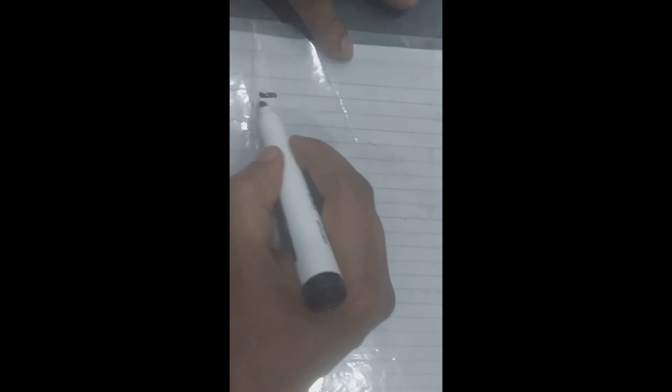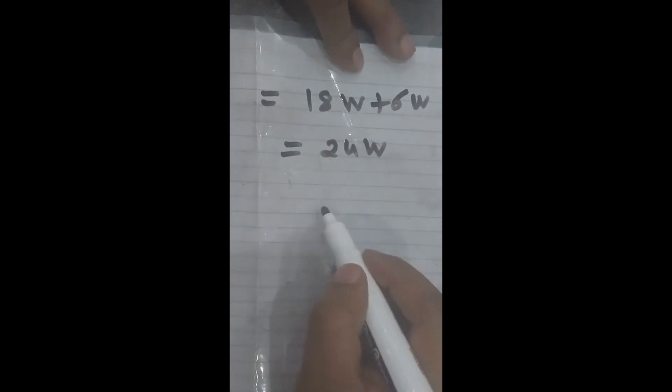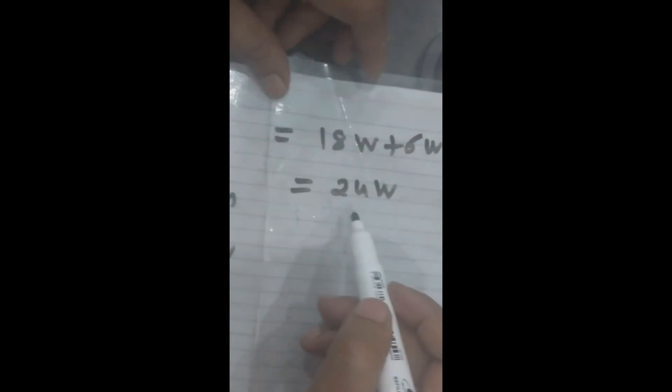It will be 2 times 9W in place of 4M, plus 6W as it is. So we further solve it. It will be equal to 18W plus 6W, which equals 24W. So it means finally we reach the conclusion that 8 men and 6 women are equal to 24 women.